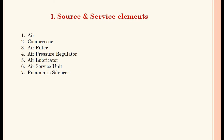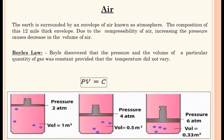The first group, source and service elements, includes: air compressor, air filter, air pressure regulator, air lubricator, air service unit, and pneumatic silencer. These are the components which come under the first group.